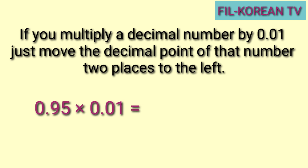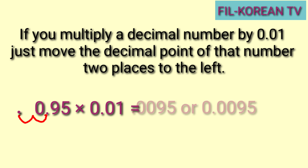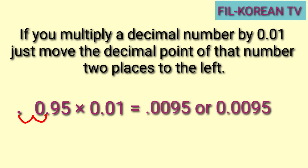Example: ninety-five hundredths times one-hundredth. Okay, ang gagawin natin, i-move natin ng dalawang ulit ang decimal point ng ninety-five hundredths pakaliwa — one, two. At dito natin ilalagay ang decimal point. Ngayon, dahil may space na isa, lalagyan natin siya ng zero. Kaya ang answer ay ninety-five ten-thousandths.